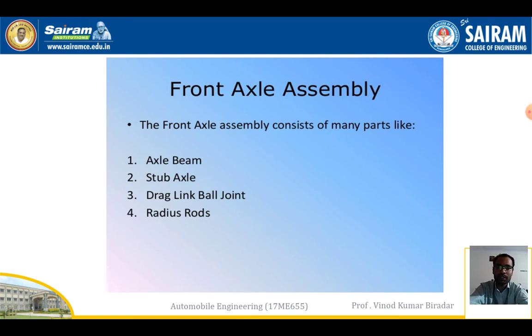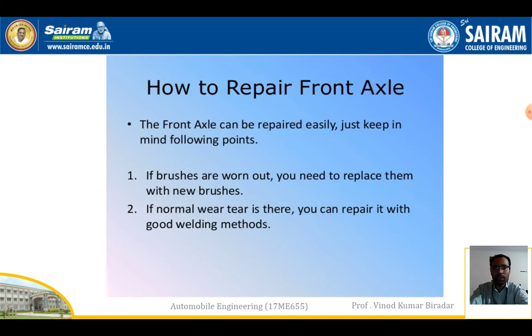The front axle assembly has four main components: the axle beam, the stub axle, the drag link, the ball joint, and radius rods.